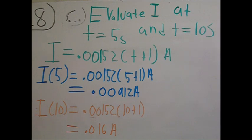And that's that. For the current at t equals 10, all we have to do is plug in 10 for t. So we have 0.00152 times (10 plus 1), which will simplify to 0.016 amps.